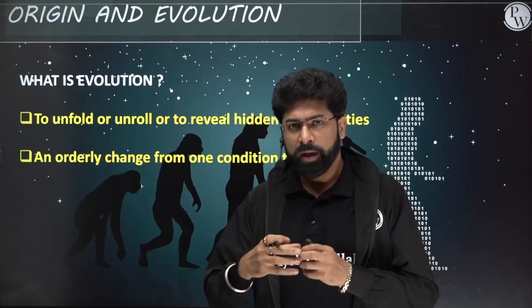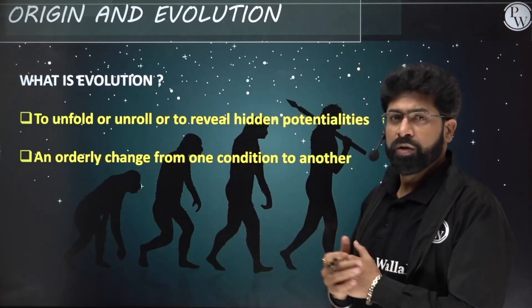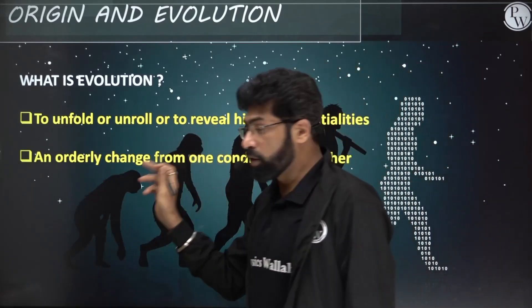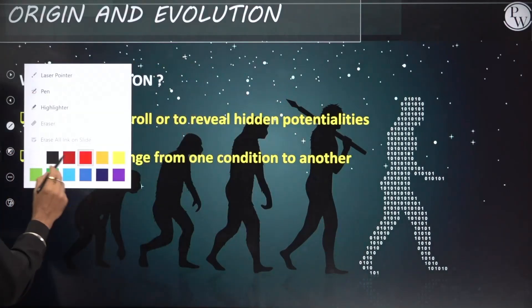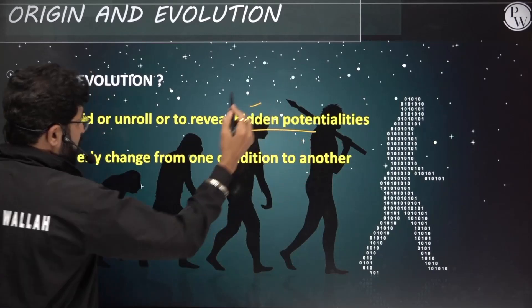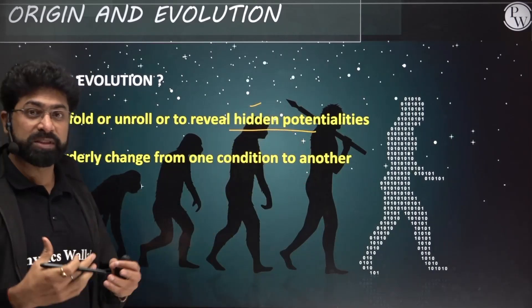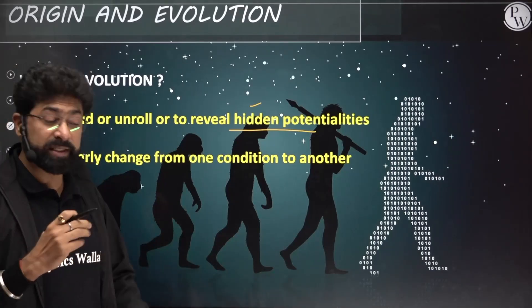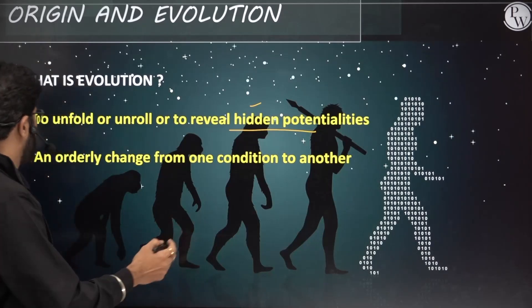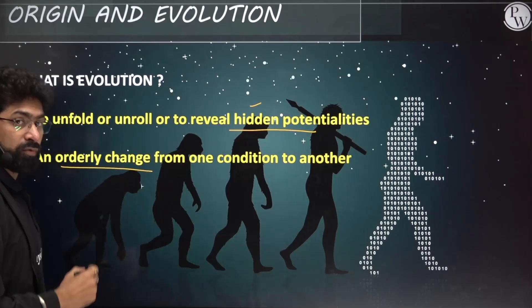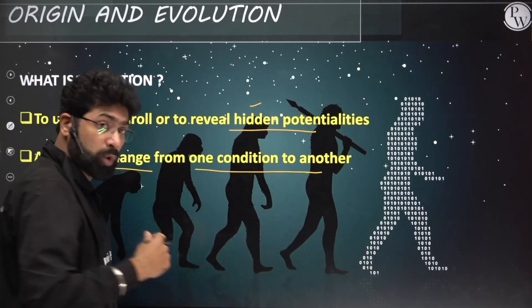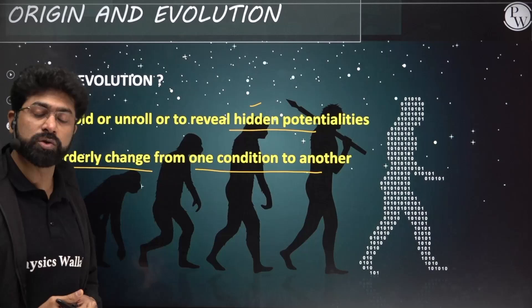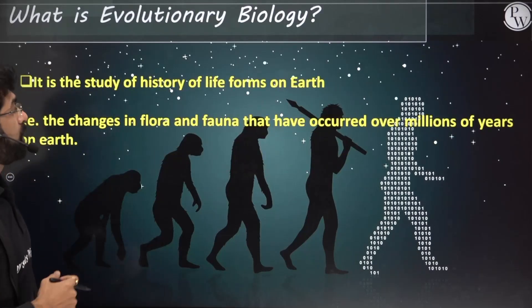Evolution is something that unmasks hidden mysteries on earth — to unfold, unroll, or reveal something which is hidden. Those hidden potentialities when revealed, for example some fossils when we unearth, that is what we study in evolution: what has happened on this earth or in the universe. It is an orderly change from one condition to another, though sometimes it may be due to sudden catastrophic events.